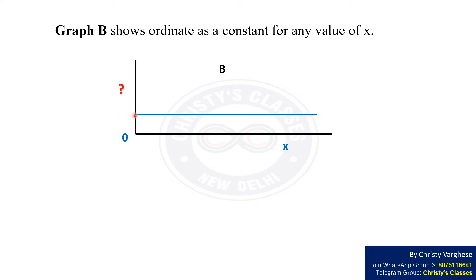In graph B, ordinate is shown as a constant for any value of x. It is also given in the question that graphs A and B define the same relationship between y and x.